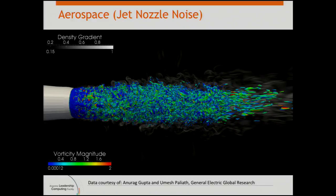This is an example of working with industry — a team from General Electric Global Research looking at jet engine design and trying to figure out how to reduce noise pollution. By reducing turbulence and noise, they're also producing more fuel-efficient jet engines.